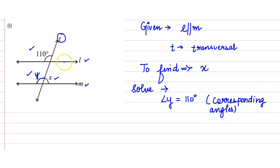As these are corresponding angles, they will be equal. Also, angle y plus angle x are on a straight line M, so therefore angle y plus angle x will equal 180 degrees, which is a linear pair.